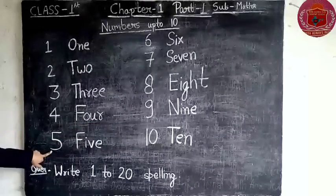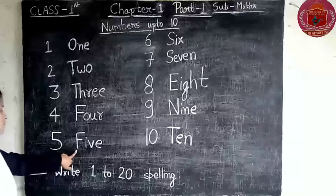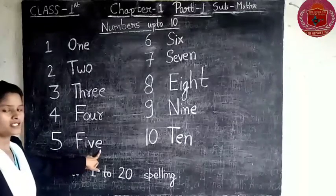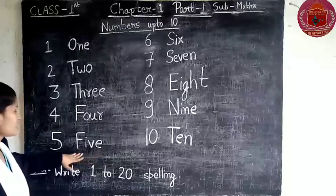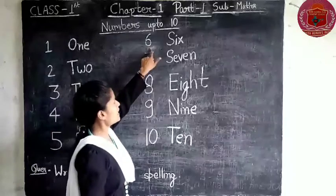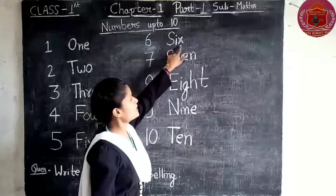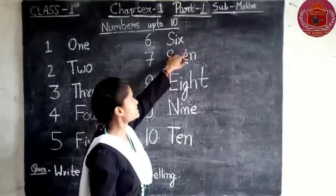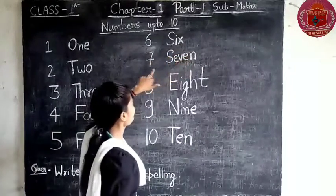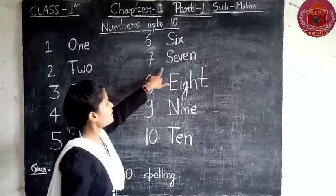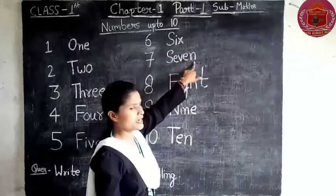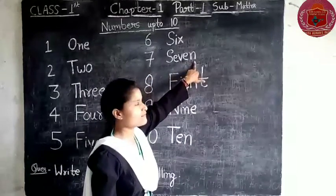Next is 5, written as F-I-V-E. Next is 6, written as S-I-X. Next is 7, written as S-E-V-E-N.